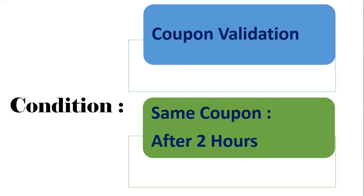The second condition is: when the user enters a coupon and it gets applied successfully, and then wants to enter the same coupon within two hours, we need to throw an error like 'coupon already applied, try after two hours.' When the user tries to enter after two hours, we say 'coupon applied successfully.' This is one of the real-time requirements.